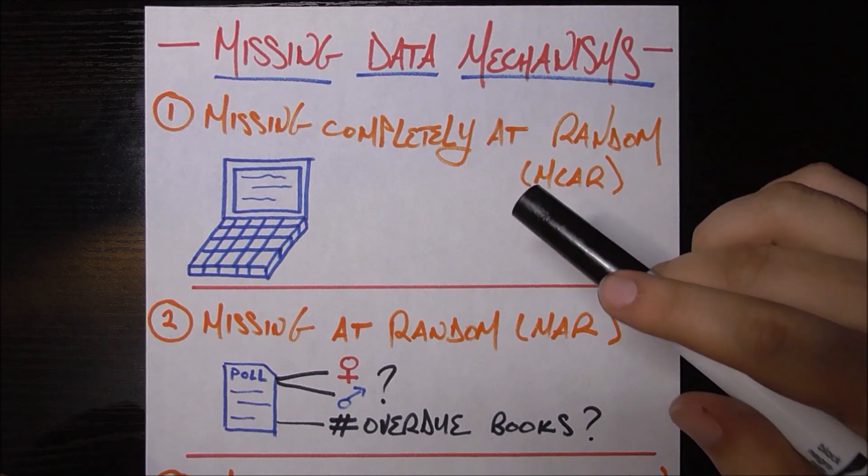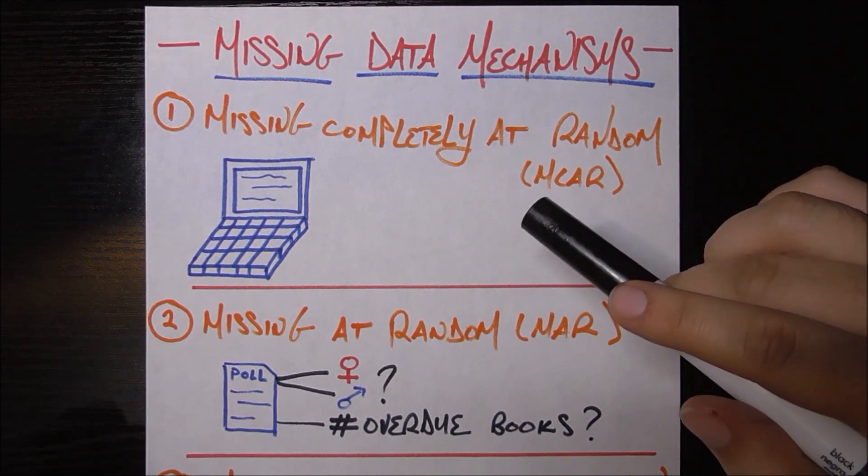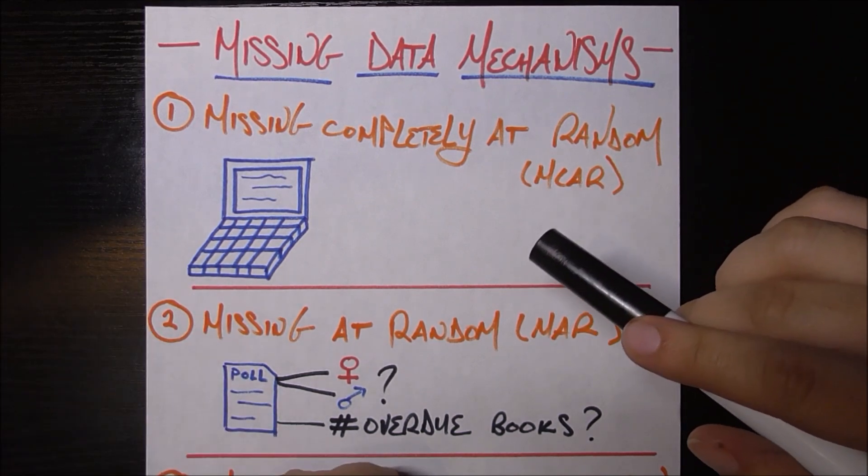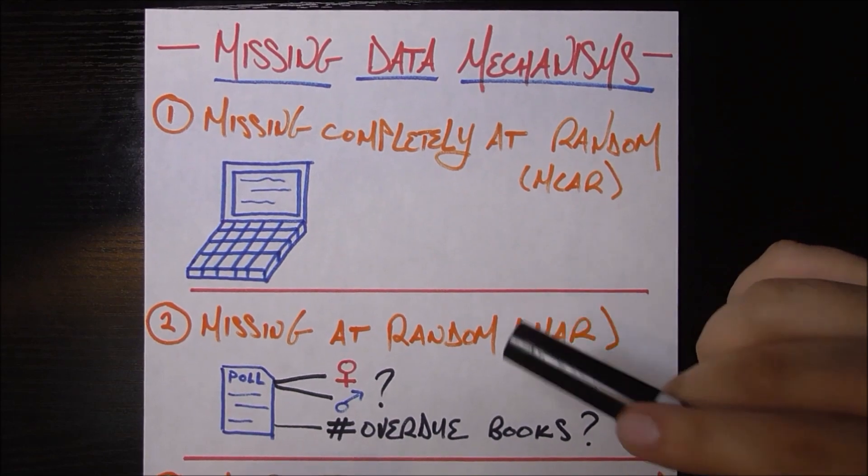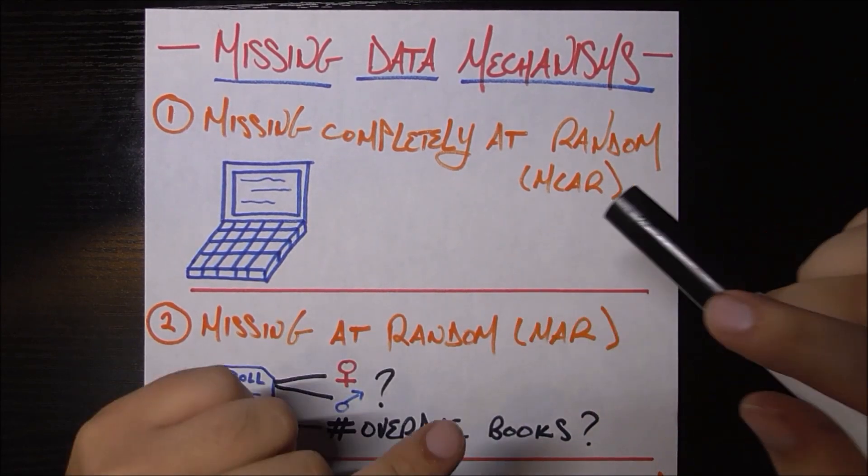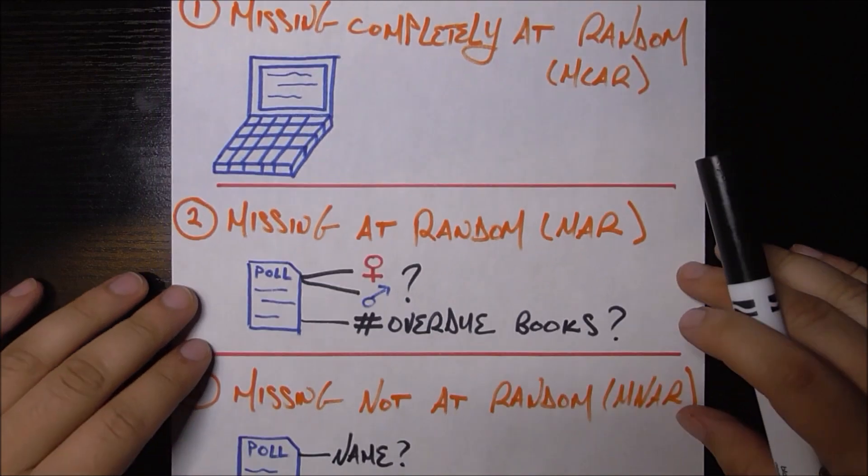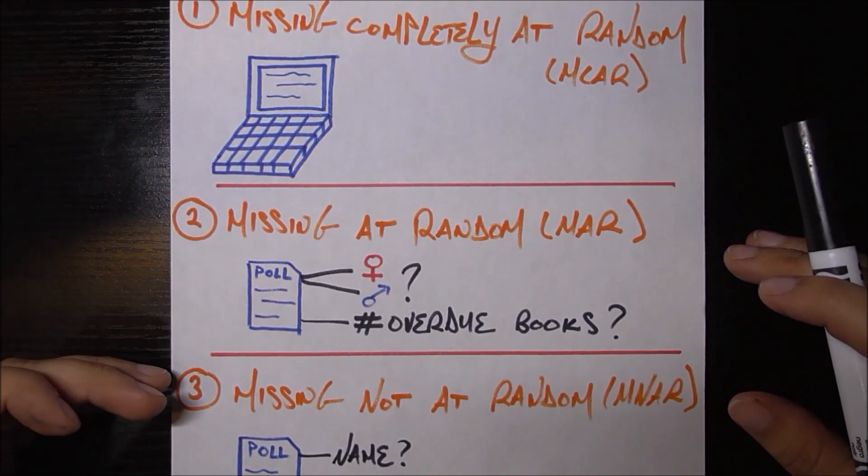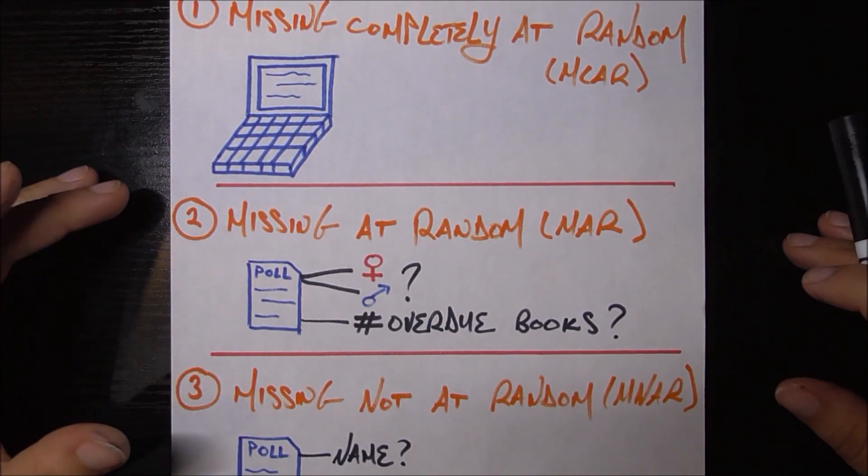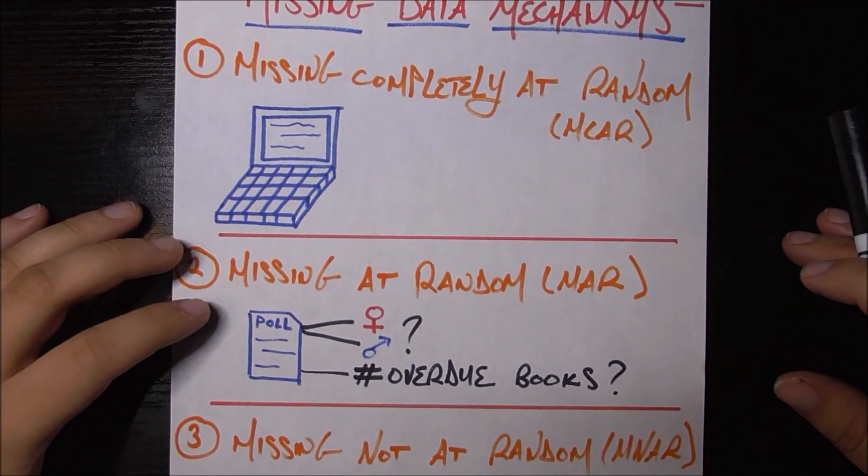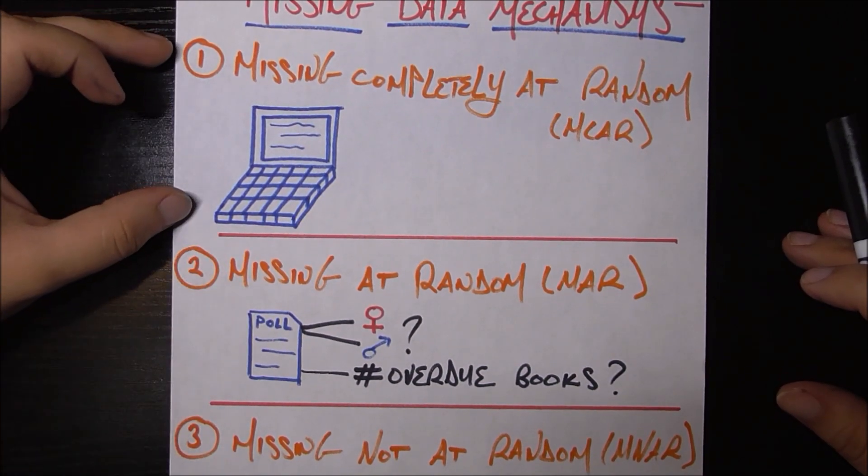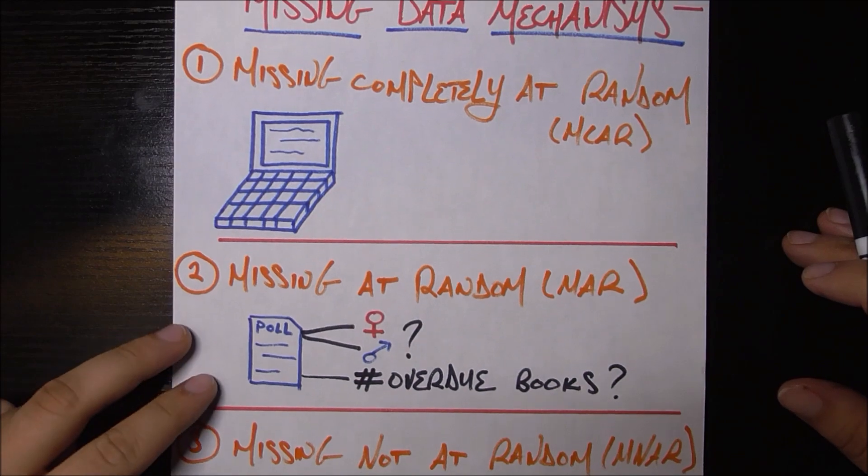We're going to get to how to deal with them in subsequent videos, but first, we need to talk about why and how data goes missing. It's not always missing for the same reason or goes missing in the same way. In this video, we'll be discussing the three major ways in data science of how data goes missing so that in future videos, we can use that mechanism to inform which methods to deal with it.